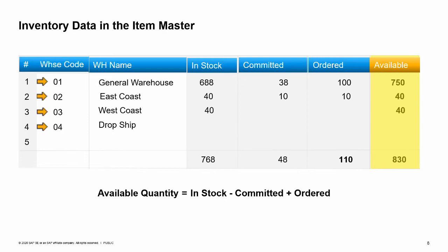You can view the quantity in stock, the committed quantity — which represents a reserved quantity such as the quantity ordered by customers, needed for components on a production order, or the quantity set aside for transfer to another warehouse — and the ordered quantity, which represents either quantity ordered for purchase by your company but not yet delivered, or the quantity on production orders for an item produced in-house, or a quantity requested from another warehouse.